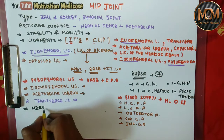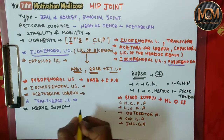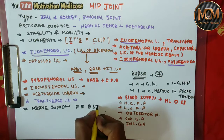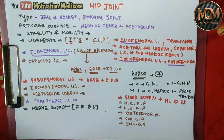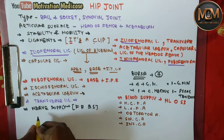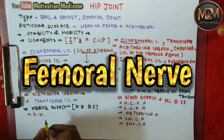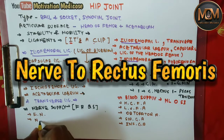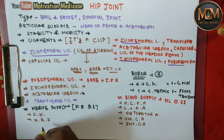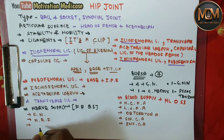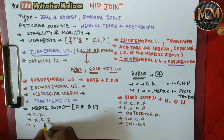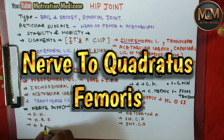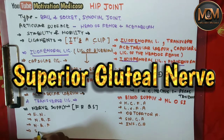So let's come to the nerve supply of the hip joint. For the nerve supply, we have a mnemonic which is FRQS. From the F we have the femoral nerve; from the R we have the nerve to rectus femoris; from the Q we have the nerve to quadratus femoris; and from the S we have the superior gluteal nerve.